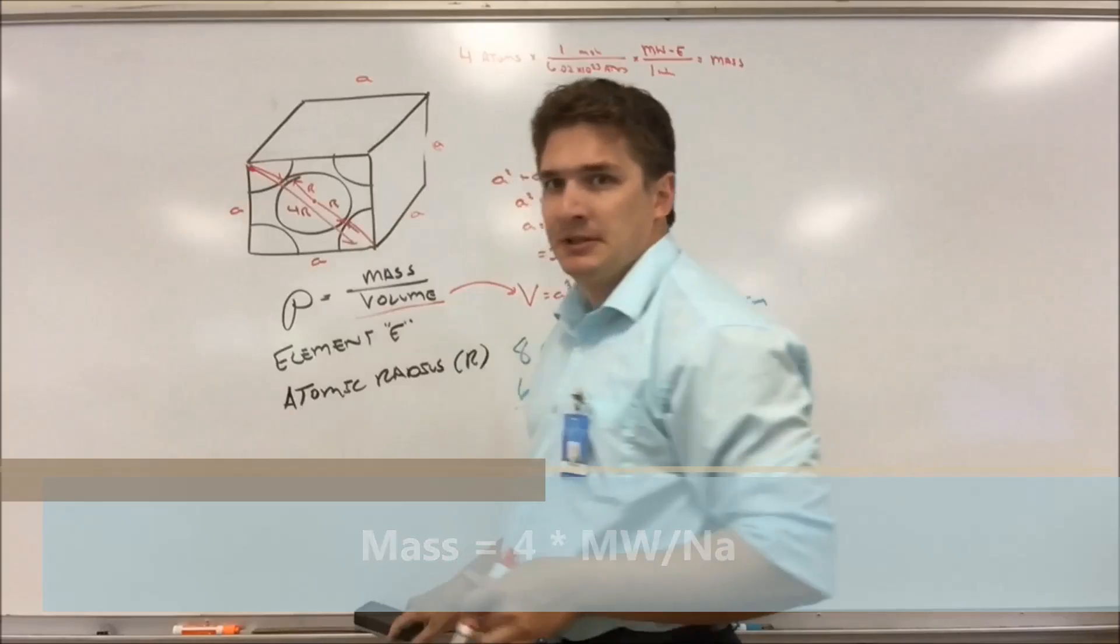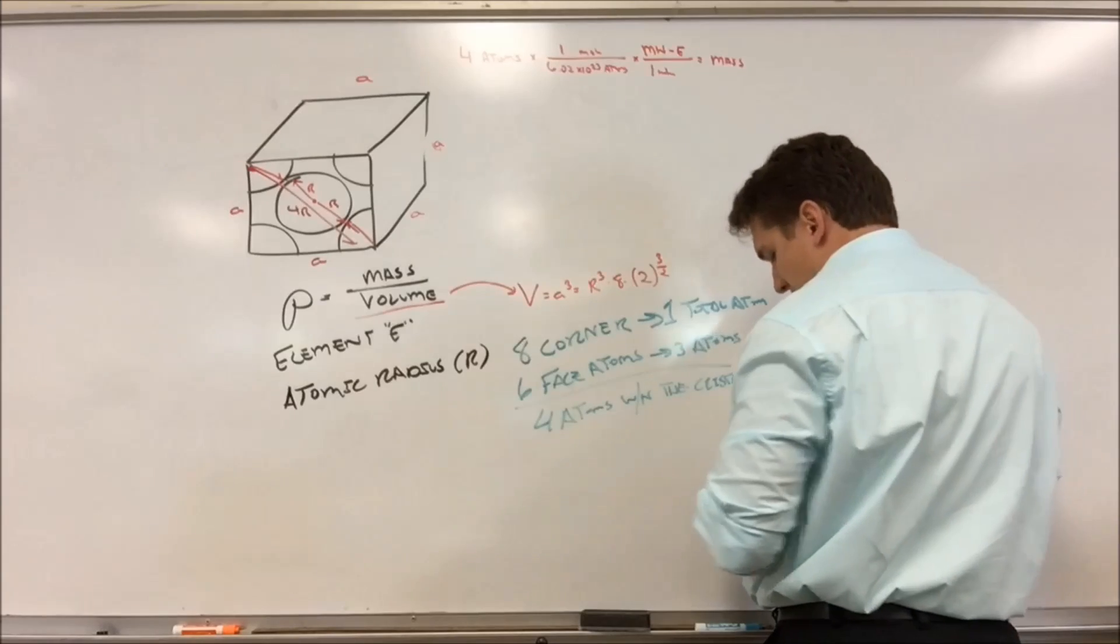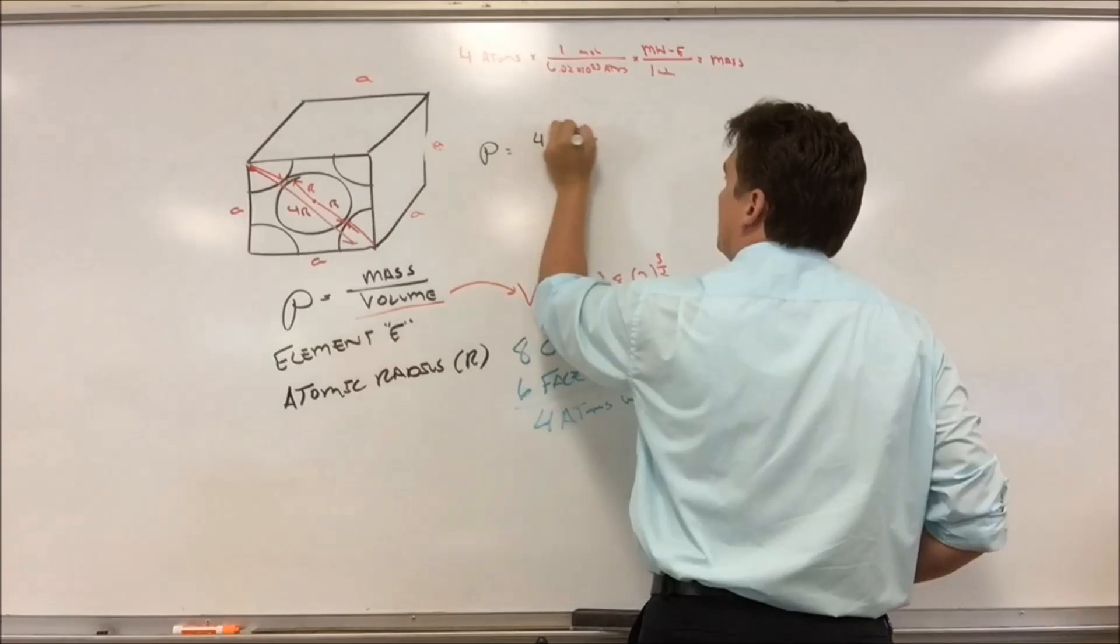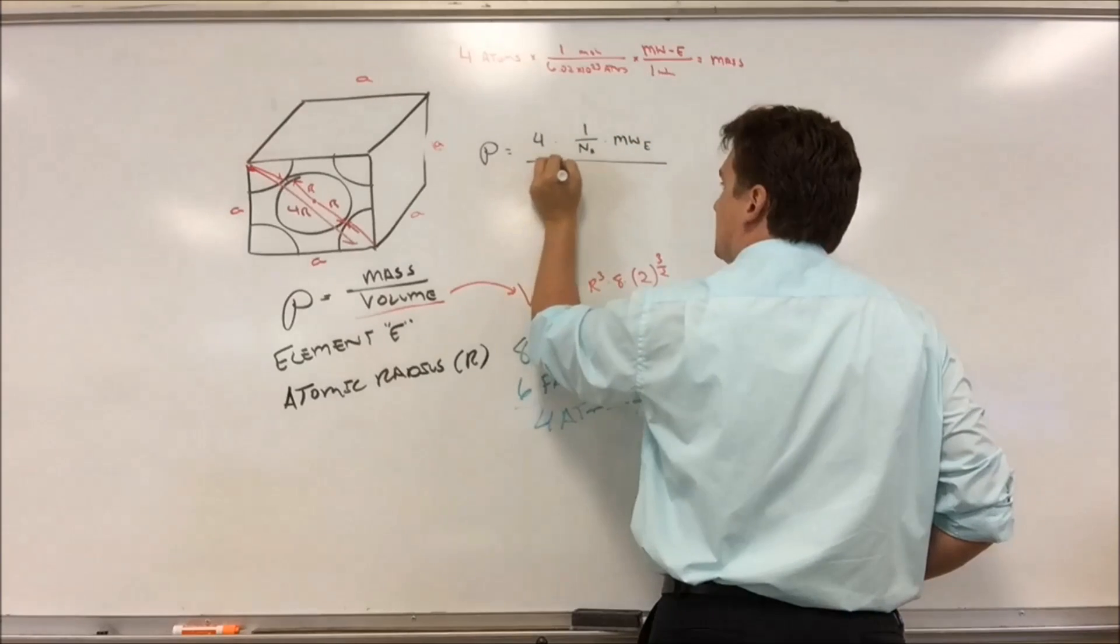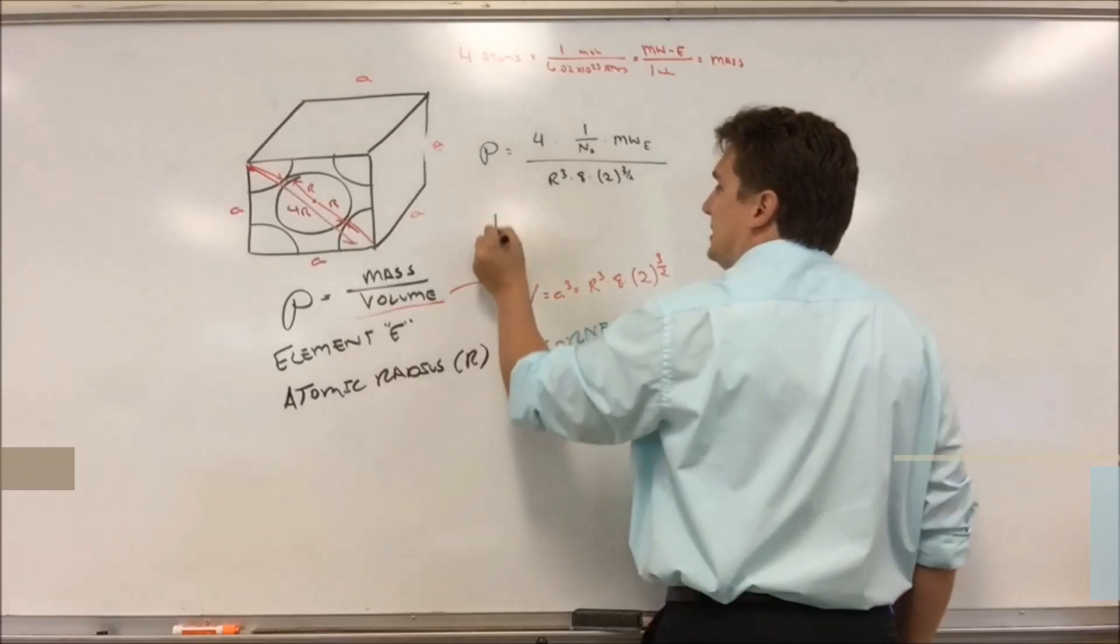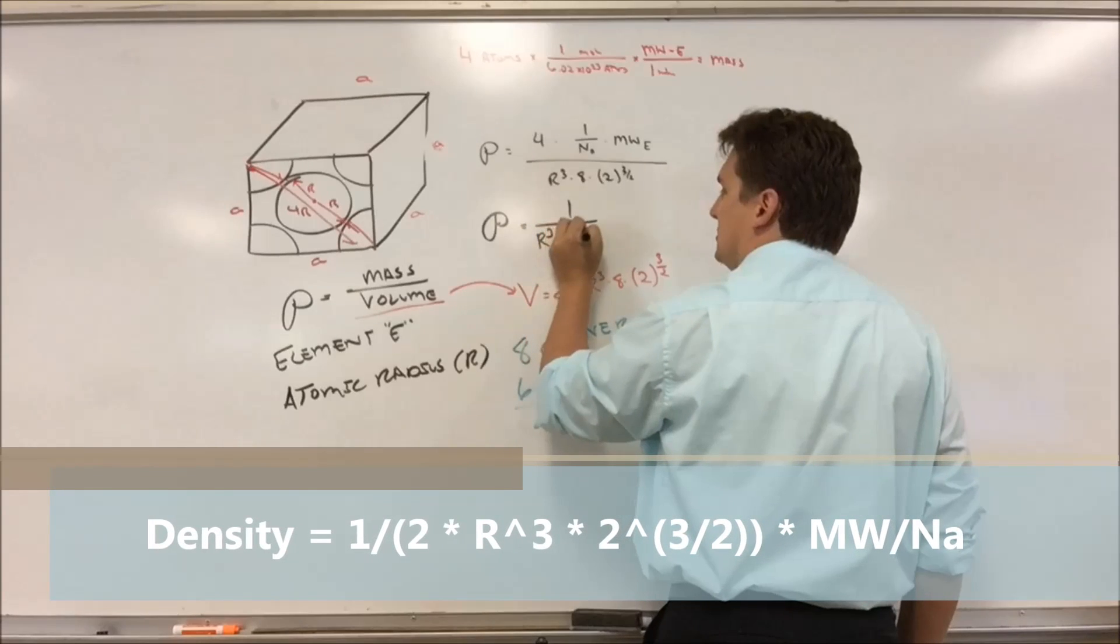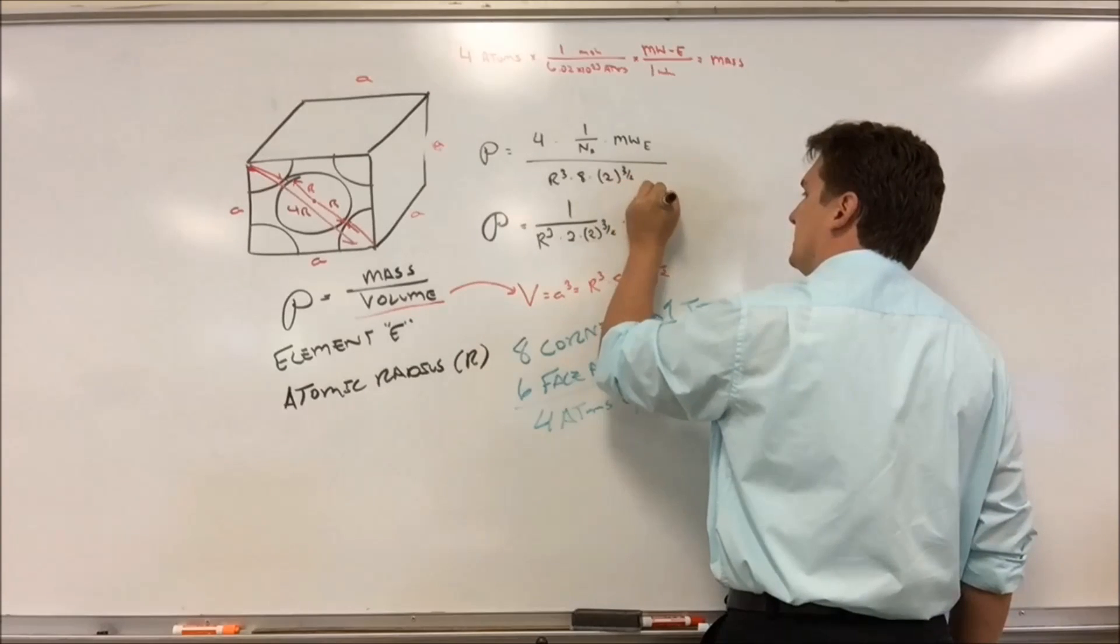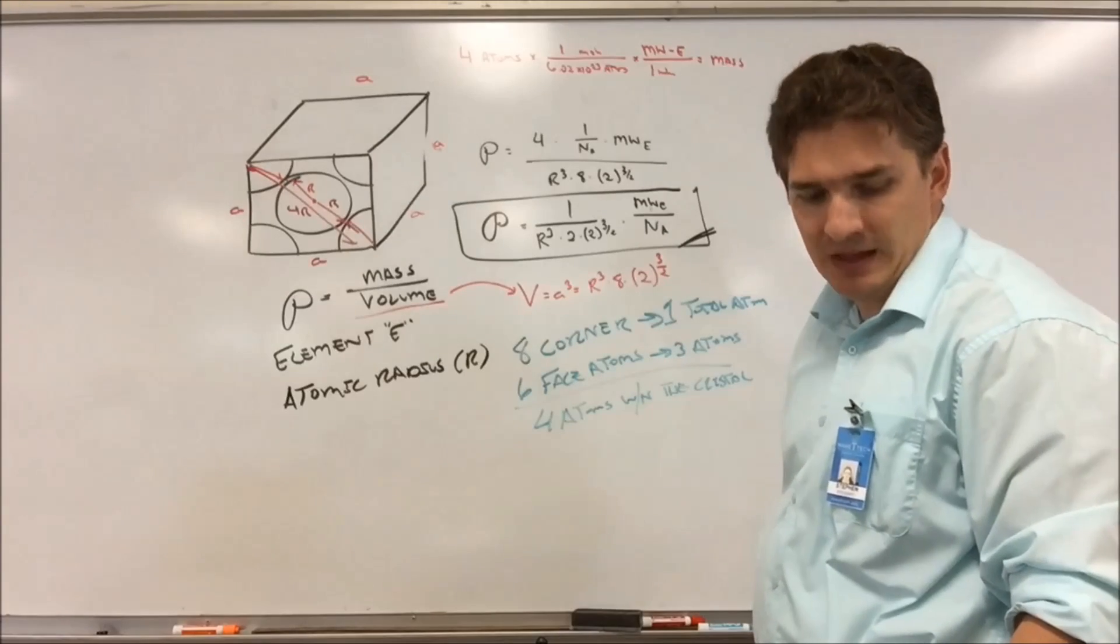So if we plug back into this formula, and I'm going to erase this part up here, we'll get the density rho is four times one over Avogadro's number times the molecular weight of whatever element E is. And the volume here is R cubed times eight times two to the three halves. So if we start simplifying here, we're going to get the density equals one over the atomic radius cubed times two times two to the three halves times one over Avogadro's number times the molecular weight of element E. And this is our theoretical density of a face-centered cubic.